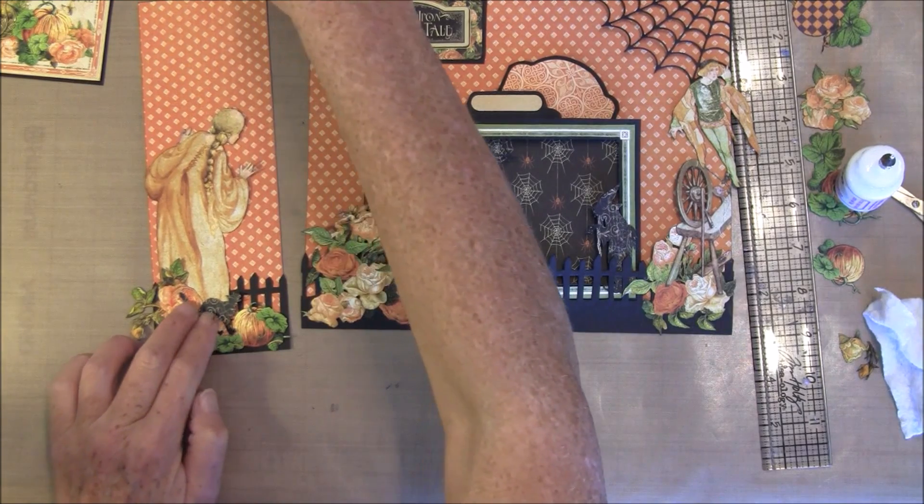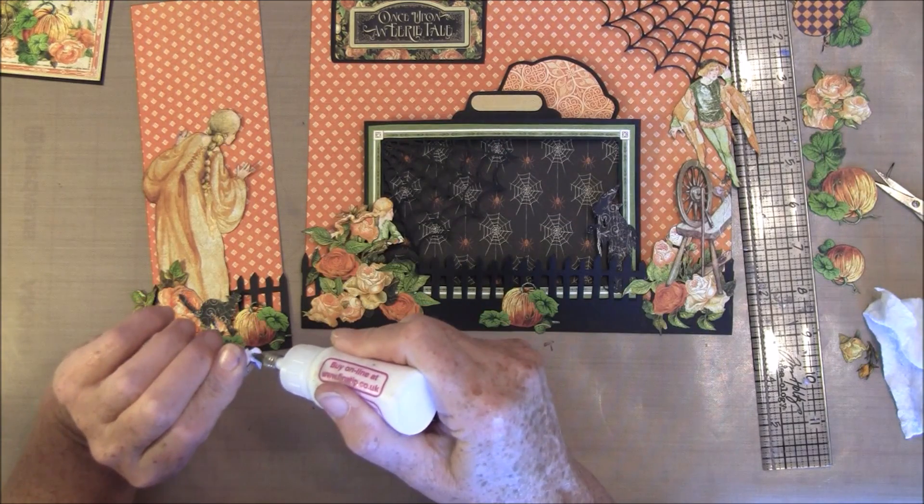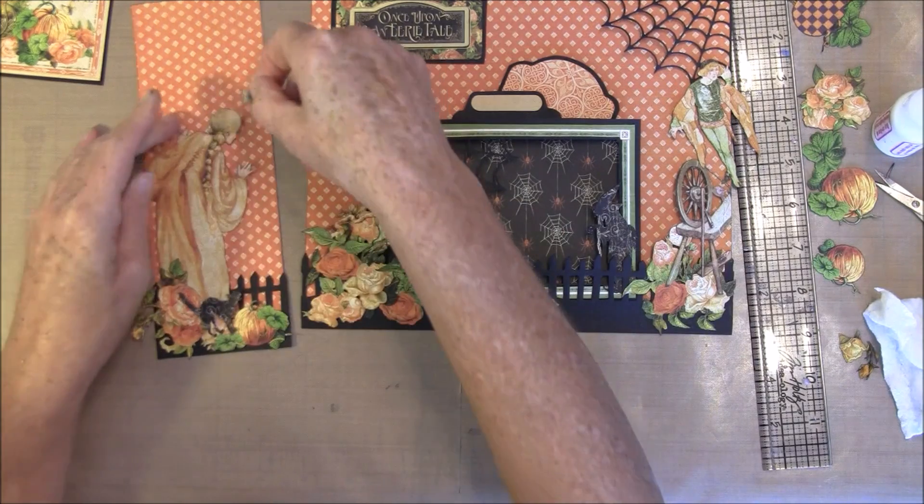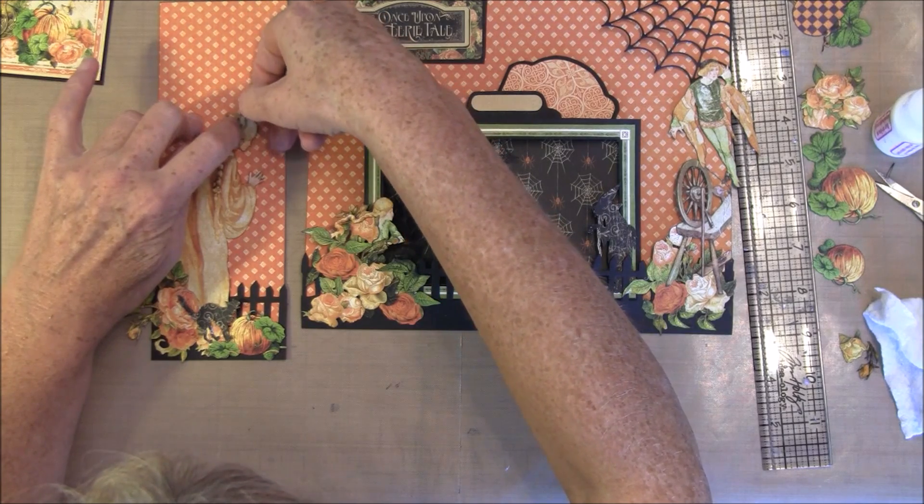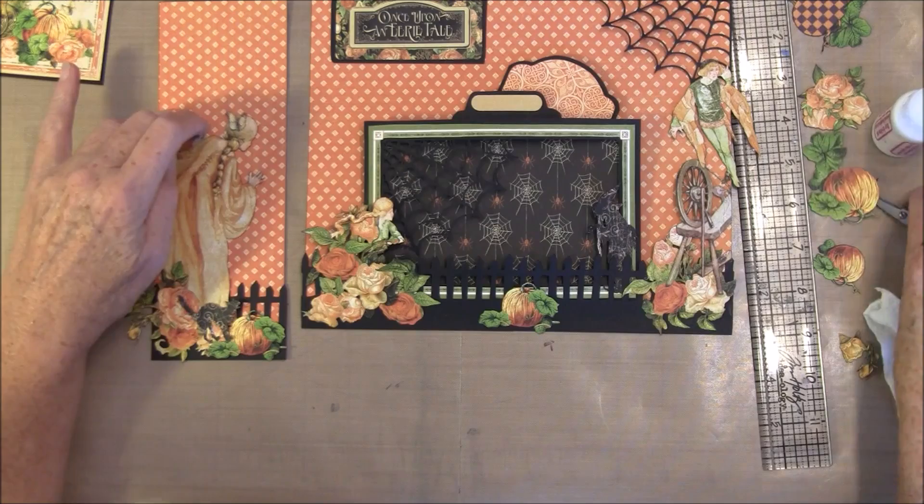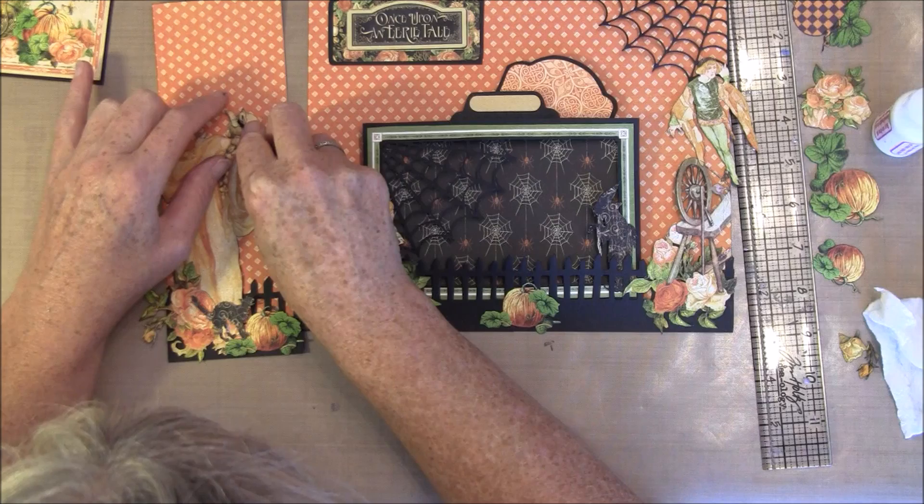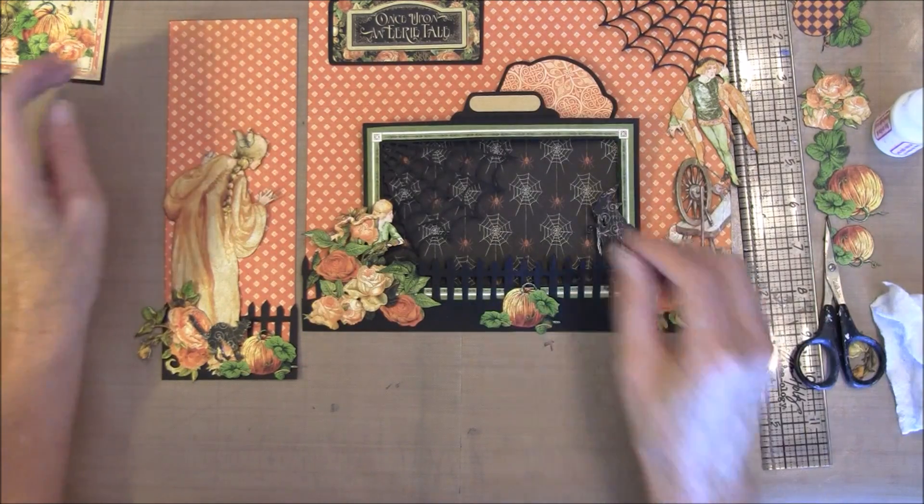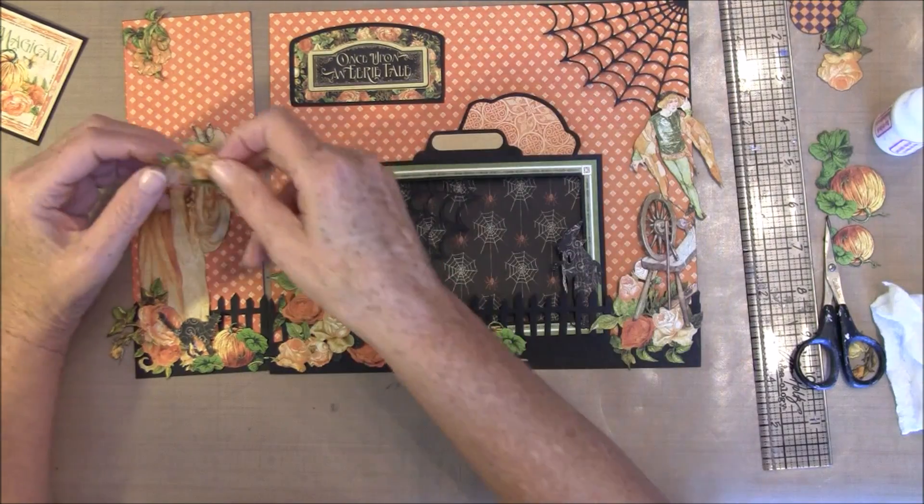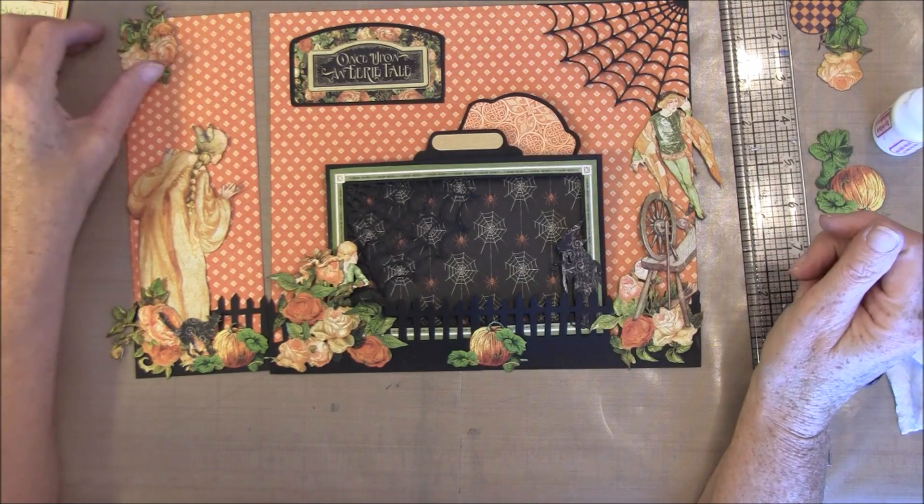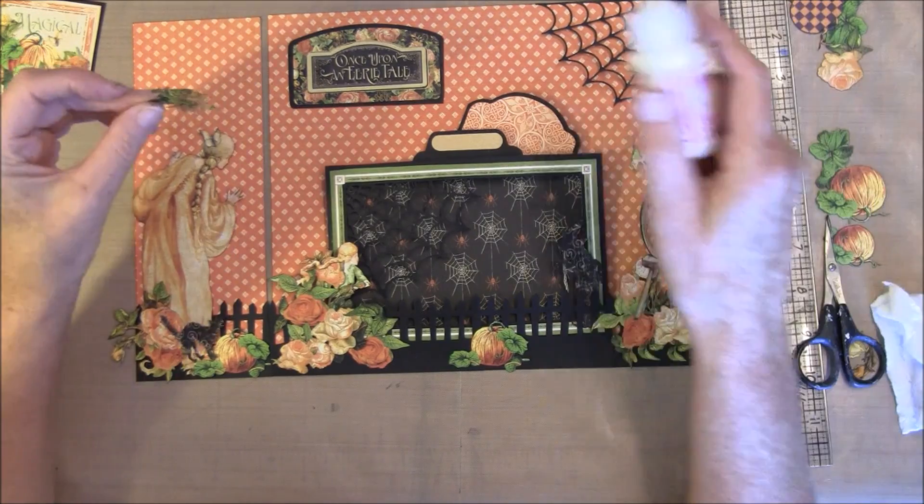And I also cut out a couple of these small tiny butterflies. So I want one in her here, and this is from the cover paper from the 12x12. I'm going to glue it down, see if I can get it to stick down.